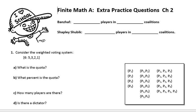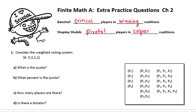Finite A, Extra Practice Questions for Chapter 2. We're going to do this in pieces, a couple of parts. We are talking about power and how powerful someone is in a weighted voting system. There are two ways that we calculate power. We have Banzhaf and we have Shapley-Shubik. Generally these give us the same answers, but they are analyzed very differently. Banzhaf: we are looking for critical players in winning coalitions. With Shapley-Shubik, we are looking for pivotal players in sequential coalitions.